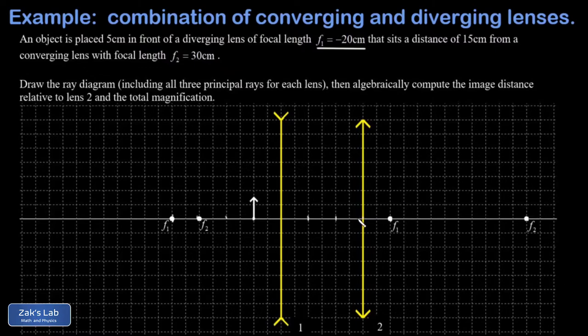Every two spaces is 5 cm — 5, 10, 15, 20, 25, 30. There's f2 on the left. And counting the same on the right: 5, 10, 15, 20, 25, 30 — there's f2 on the right.